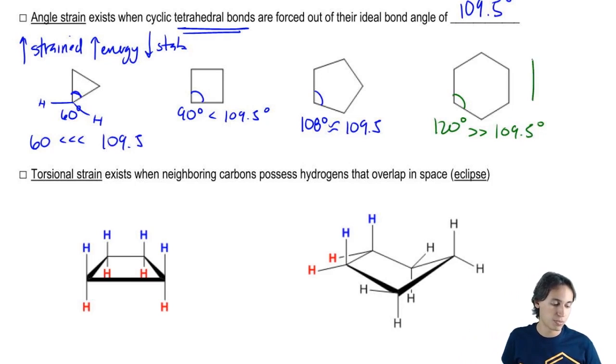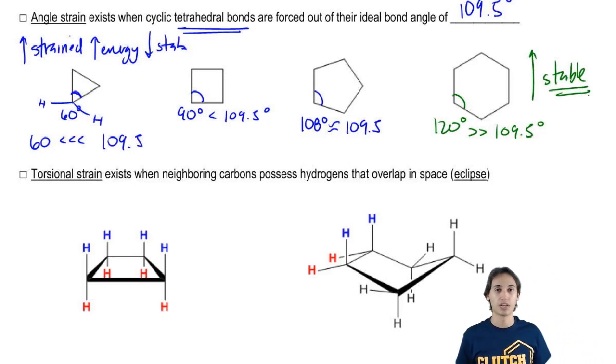Cyclohexane actually turns out to be the most stable ring out of all the rings. You can make as many carbons, you can make tons of carbons, but cyclohexane is the most stable ring.